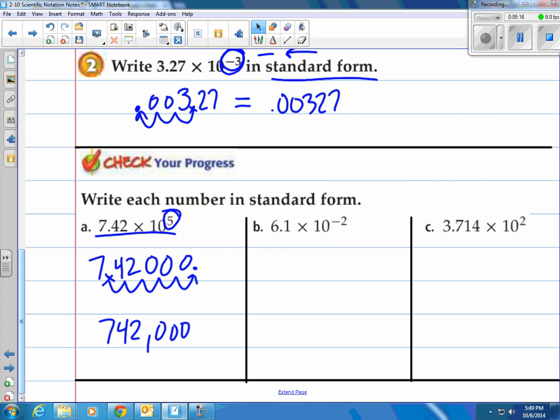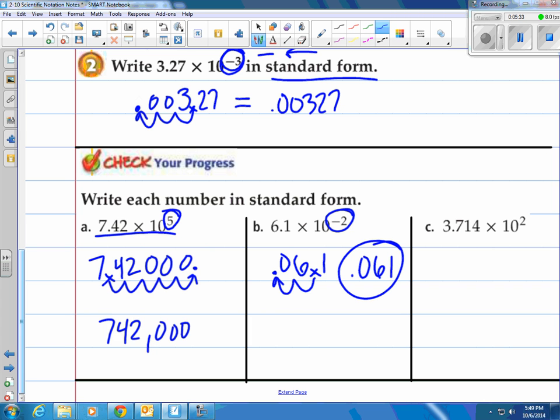How about the second one here? Now I got a negative exponent. That means I'm gonna move the decimal to the left two spots. So I have 6.1. I move it two spots to the left and I fill in with a zero. So our answer to that is 0.061, 61 thousandths.